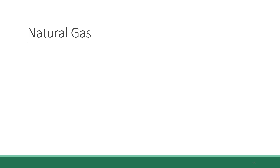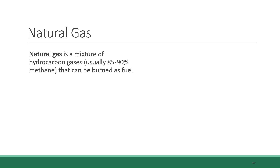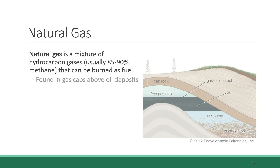The third and final fossil fuel type we'll be going through in this section is natural gas. Natural gas is a mixture of hydrocarbon gases that can be burned as fuel. The main constituent of the mixture is methane, which usually represents 85 to 90 percent of the blend.